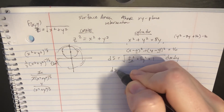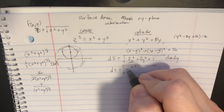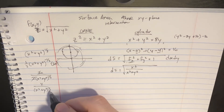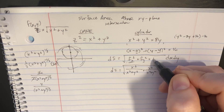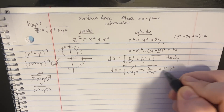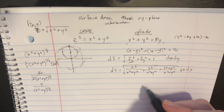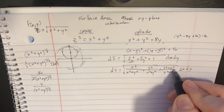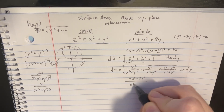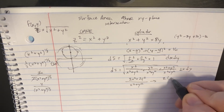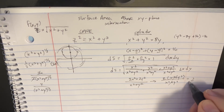Plugging into the surface area formula and squaring, we get x squared over x squared plus y squared, plus y squared over x squared plus y squared, plus x squared plus y squared over x squared plus y squared. Everything combines under one denominator giving 2x squared plus 2y squared over x squared plus y squared, which simplifies — the terms cancel and we're left with just 2 inside the square root.